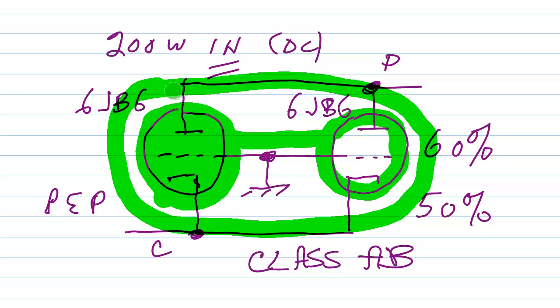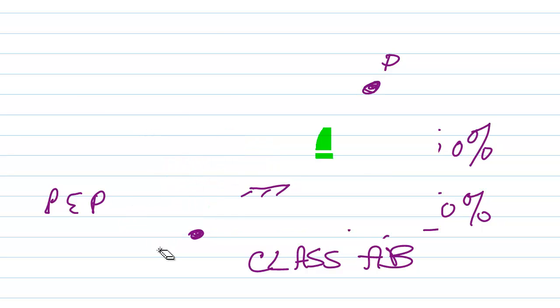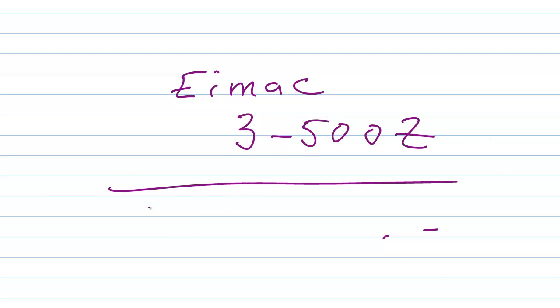Now I also had a Drake L4B linear amplifier that I got later down the pike. And that used a pair of vacuum tubes in parallel known as 3-500Z tubes. Well, they were known as the Eimac 3-500Z. Venerable old workhorse of a vacuum tube.